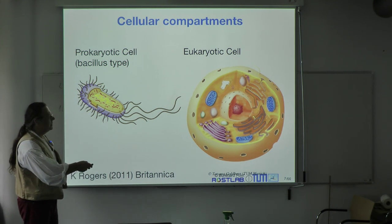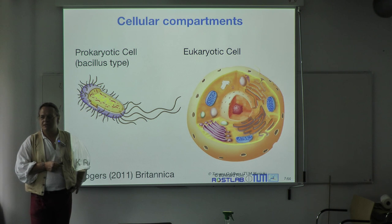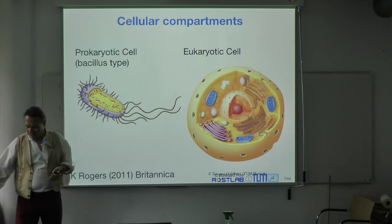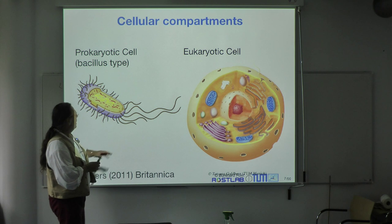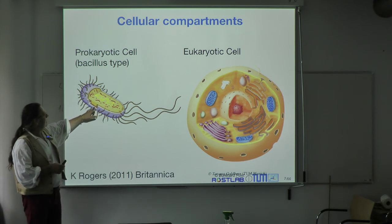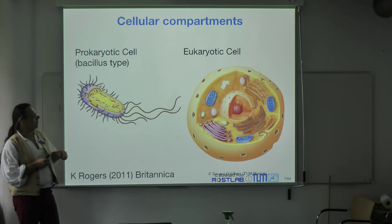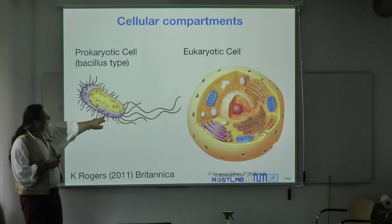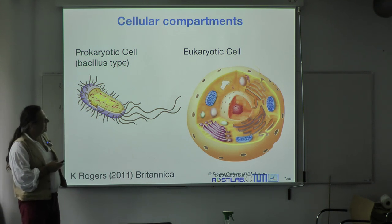The idea is to somehow safeguard the genetic information against the environment, to put it into the center in some sense. As discussed, the cell wall is built up of a double layer of lipids. You can see structures like flagella — parts of the cell that stick out.